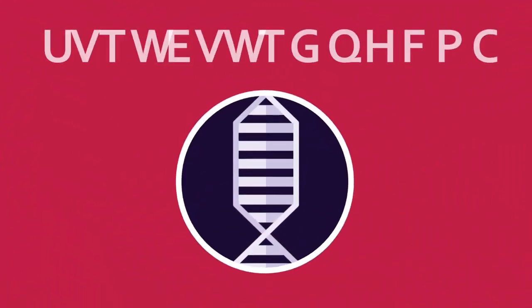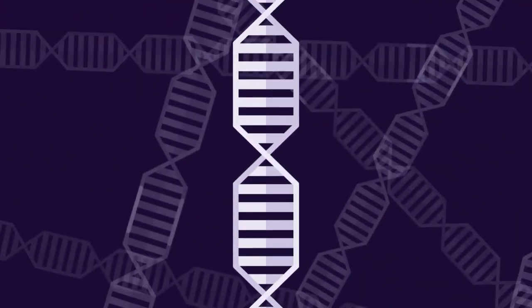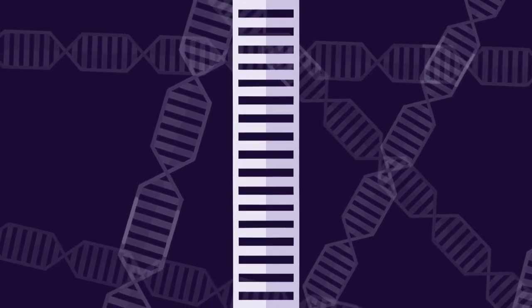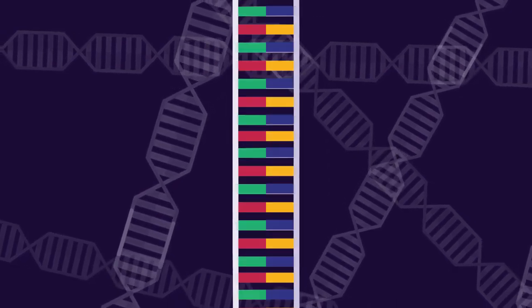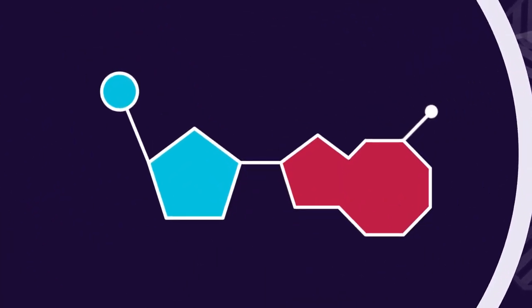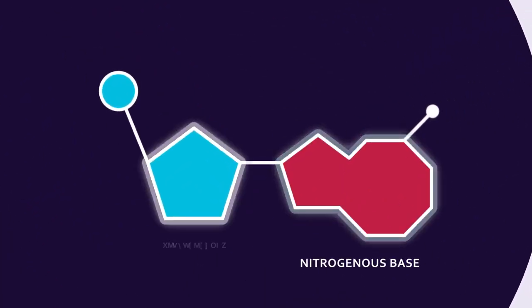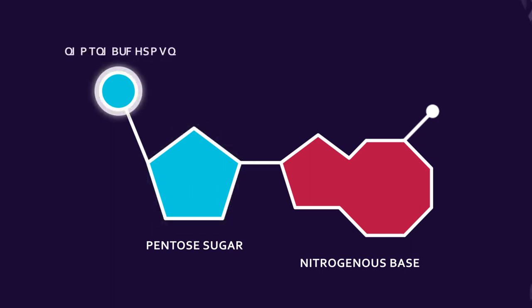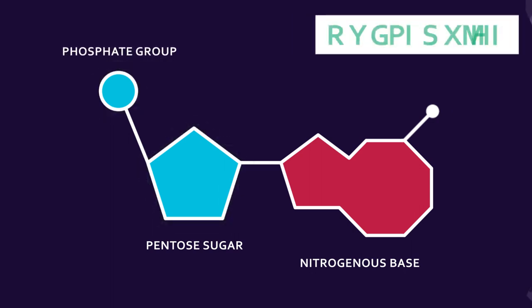Now let's talk about the structure of DNA. Think of DNA structure as a ladder whose rungs are made up of different bases and sides as sugar phosphate. Each composition of this nitrogenous base, pentose sugar, and phosphate group is called a nucleotide.